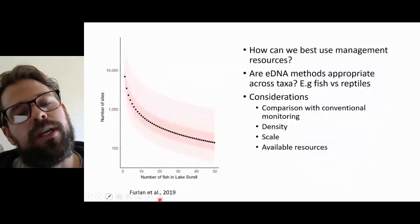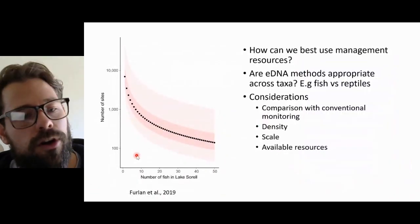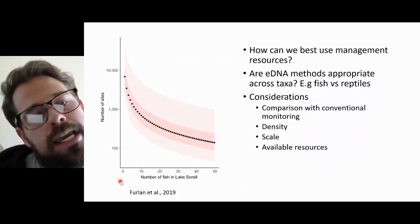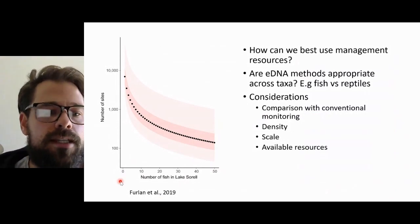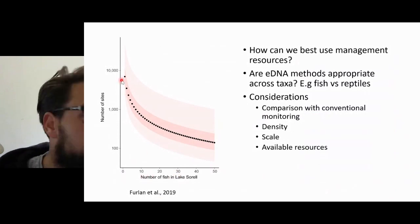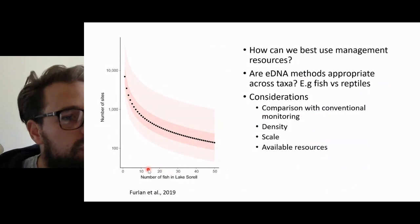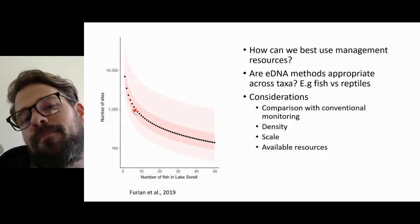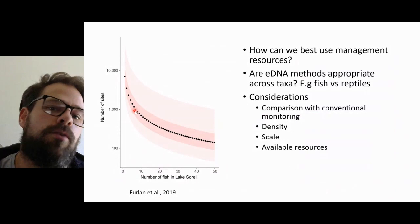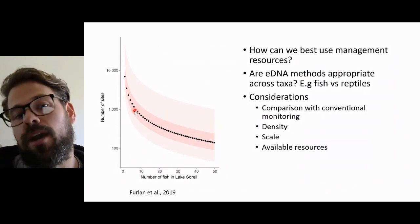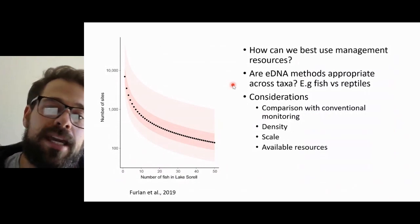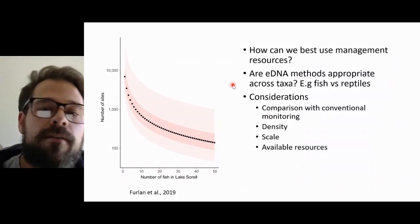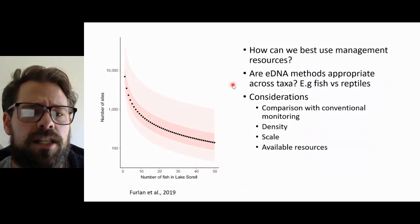Bearing this in mind, using a graph from Furlan — one of my supervisors — she had a study in Tasmania looking at carp density, and basically modelled out how confident you could be detecting carp depending on the number of fish and how many samples you would need. As the number of fish reduces, it goes up to 1,000 samples required, which is ultimately not that effective. From my perspective, it really got me thinking about how we can best use our resources, whether eDNA or something else, and also whether eDNA methods are actually appropriate for reptiles when we know that for fish they can work quite well but we're having some challenges with turtles.